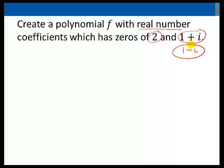So our polynomial f of x will be equal to, if 2 is a zero, we will have a factor of x minus 2. If 1 plus i is a zero, we will have a factor of x minus 1 plus i.